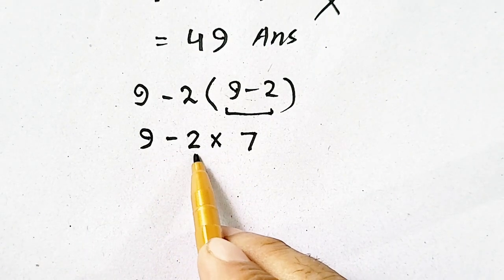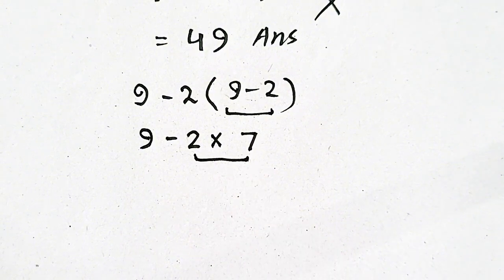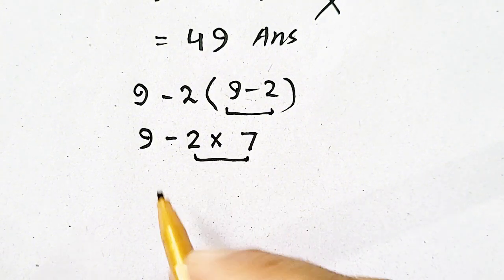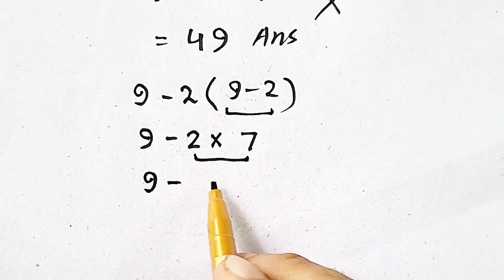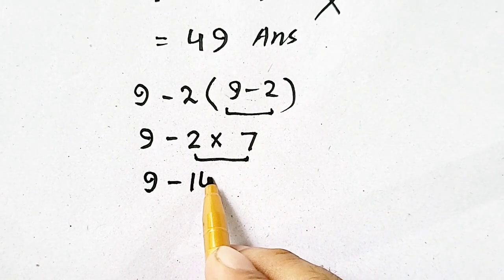so we will prefer multiplication according to PEMDAS or BODMAS rule. So, 9 minus 2 times 7 will be equal to 14.